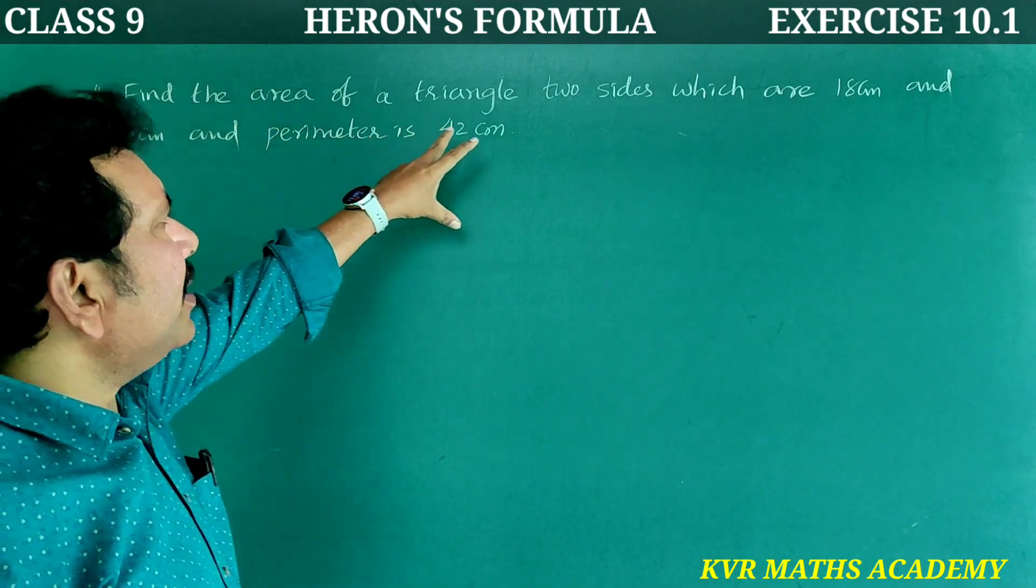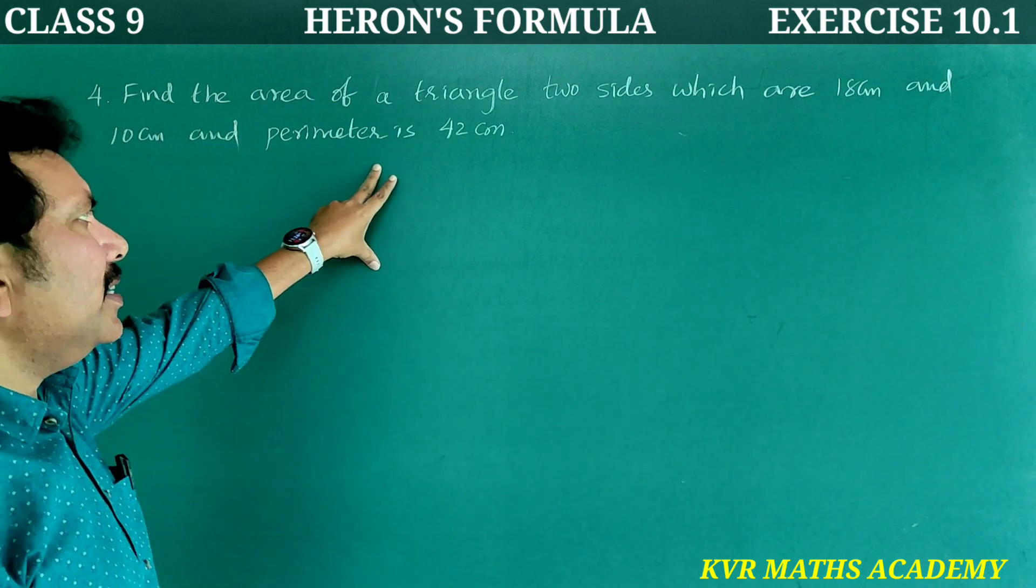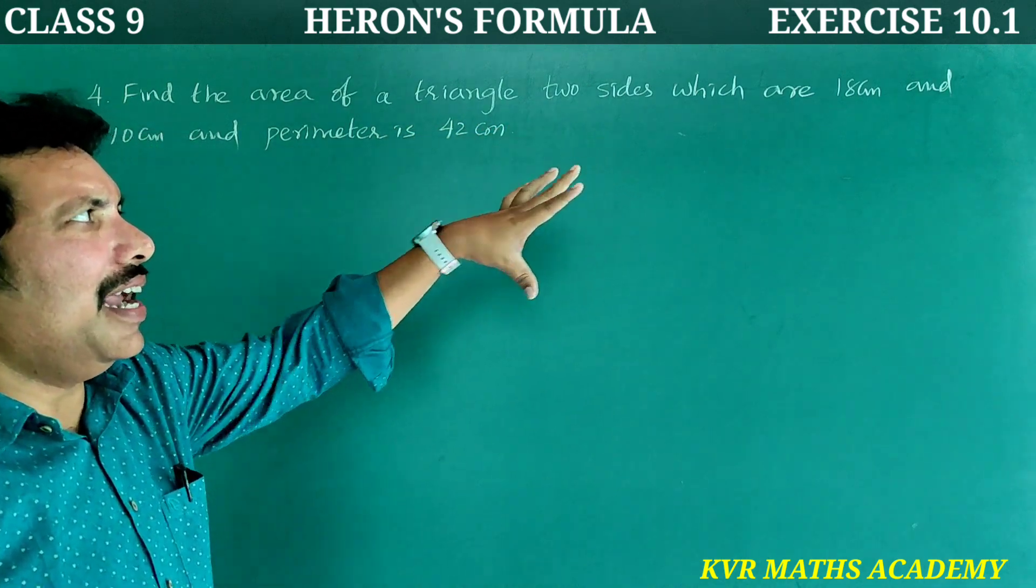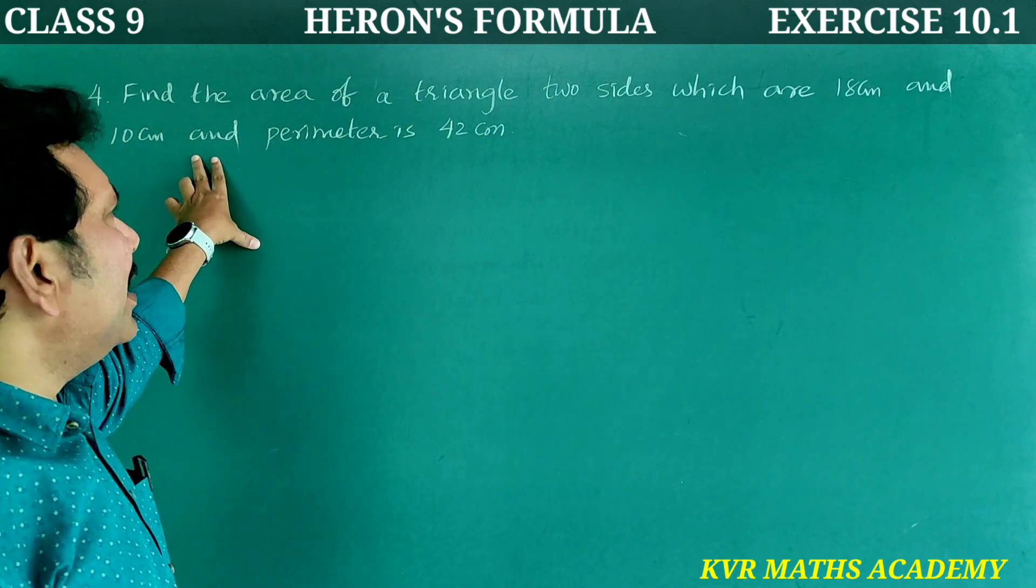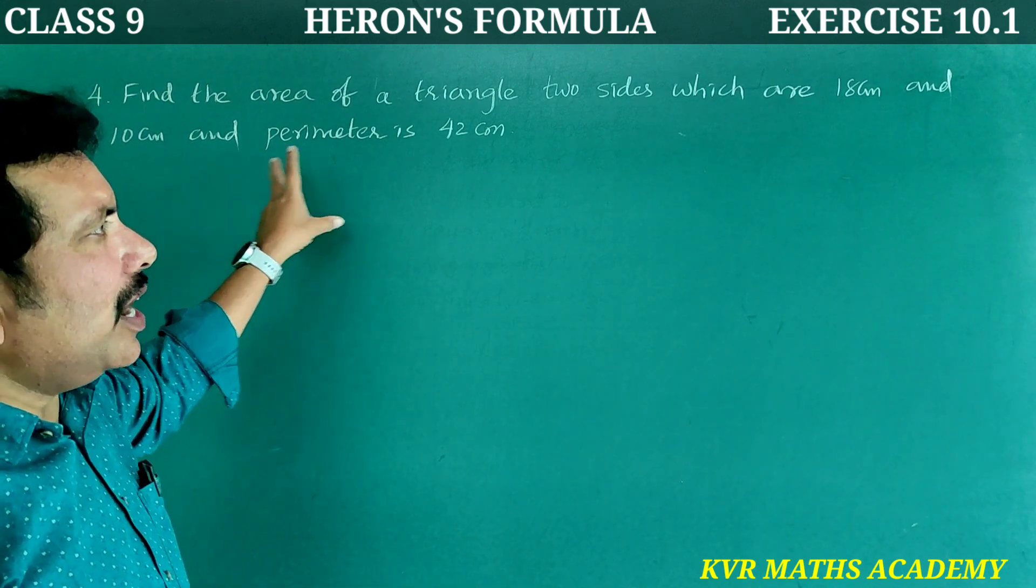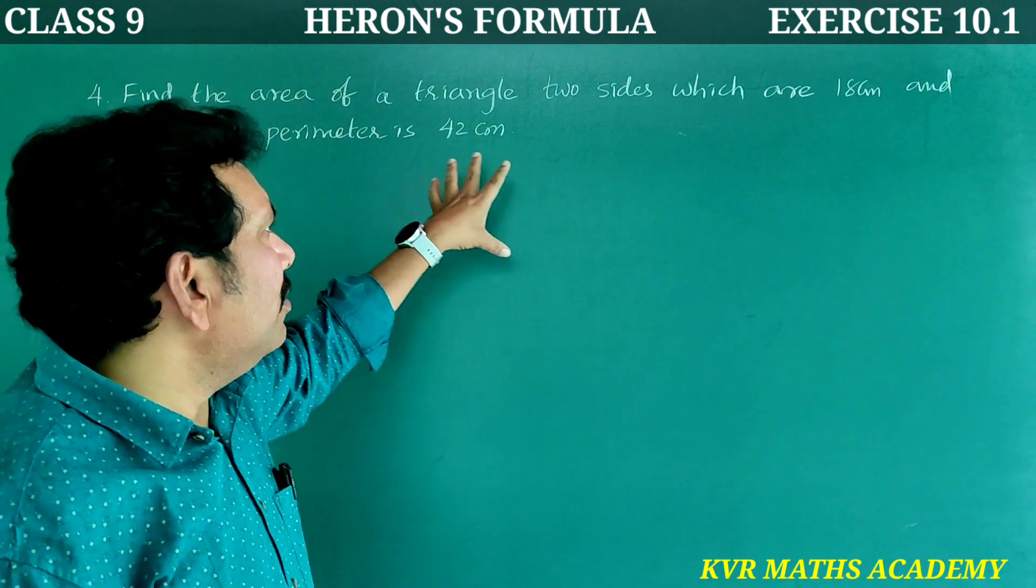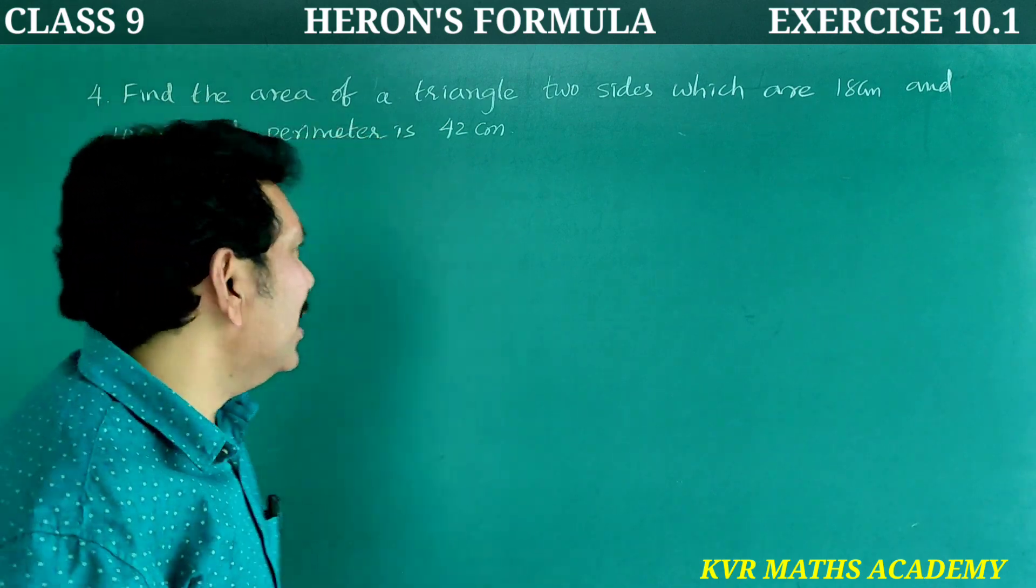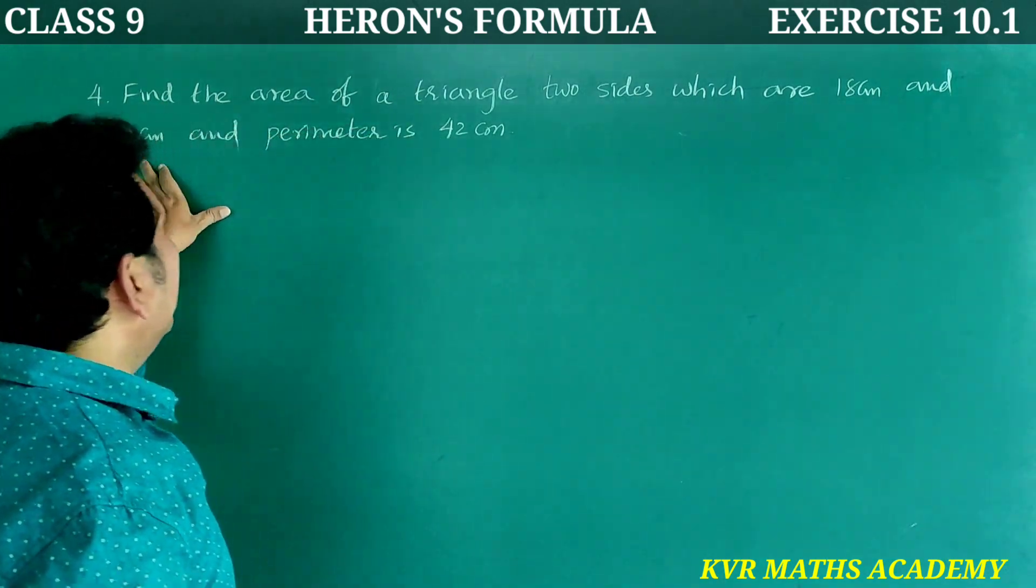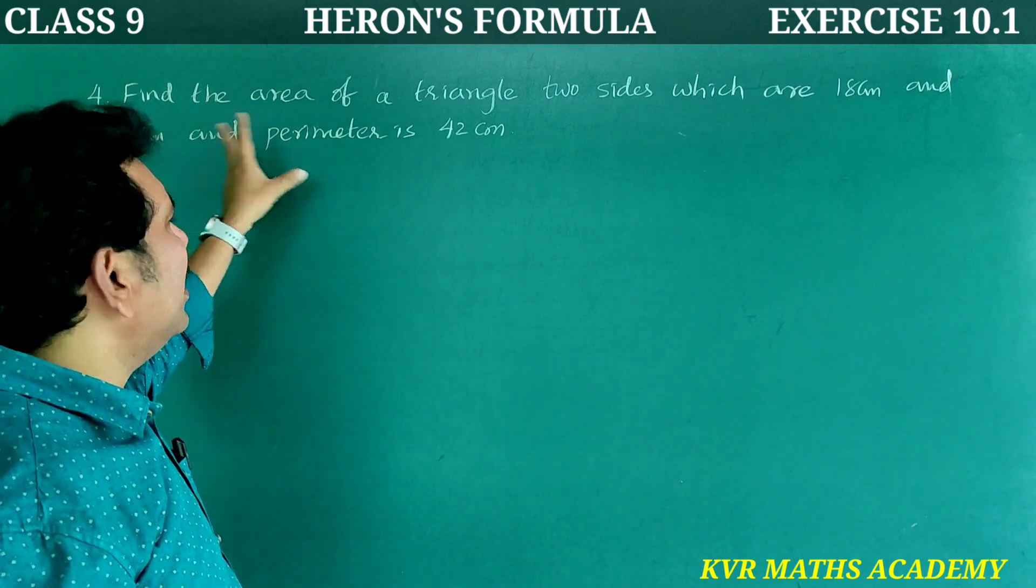4th question. Find the area of a triangle, two sides which are 18 centimeters and 10 centimeters and perimeter is 42 centimeters. So from this we have to find the value of third side after that we have to find the area of the triangle.